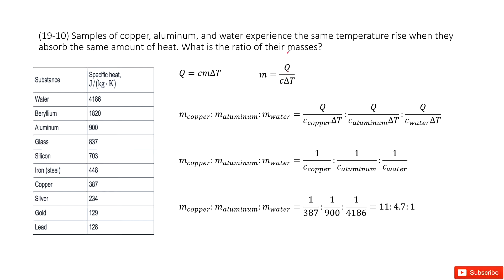Now we need to find the ratio for the masses. So we just introduce this function Q/(cΔT) for copper, aluminum, and water.